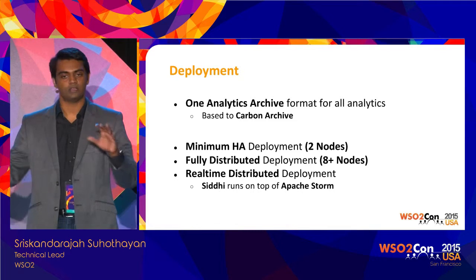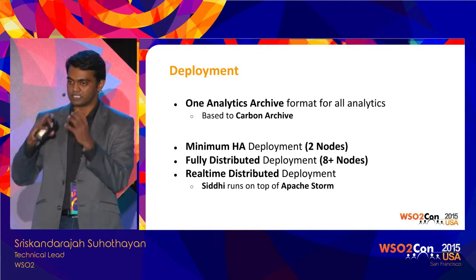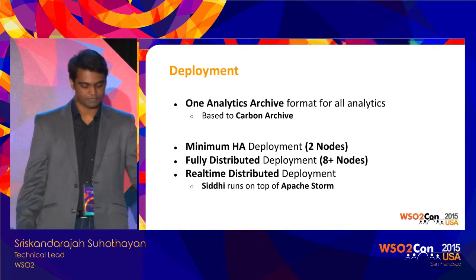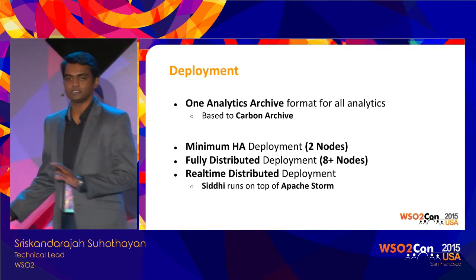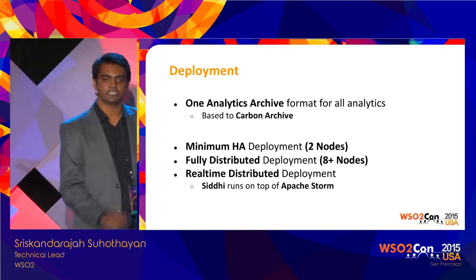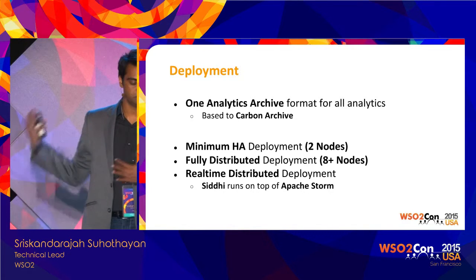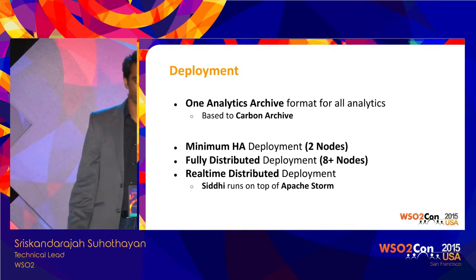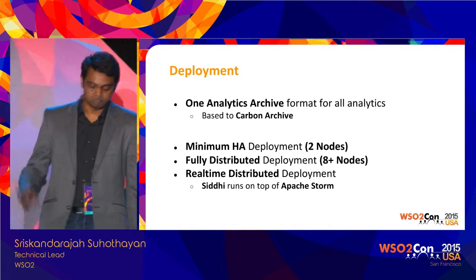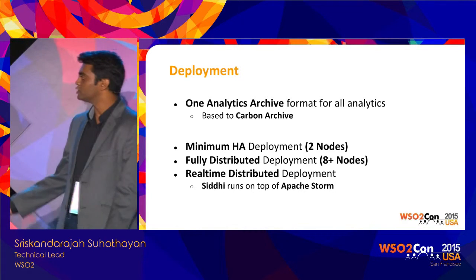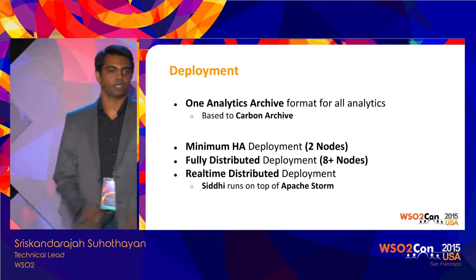The minimum deployment is two nodes, suitable for small and starting customers. If you need to scale out, you can scale up to eight, ten, or more nodes based on your scalability requirements. Real-time distributed processing can also be done on Apache Storm, which is also new for this release.